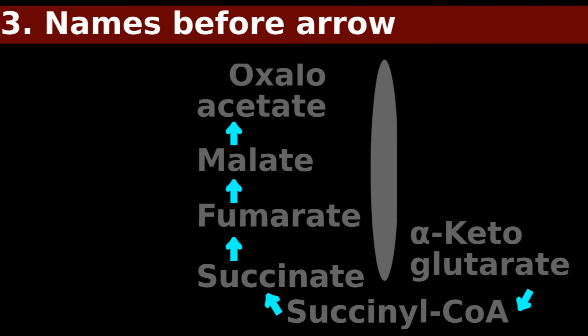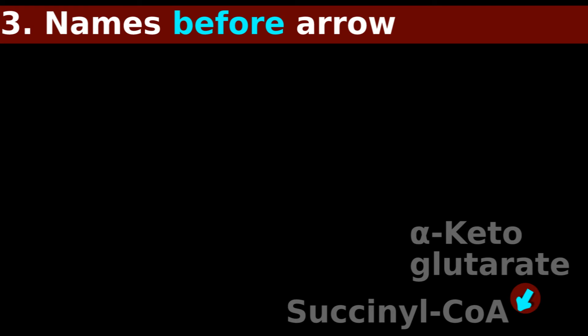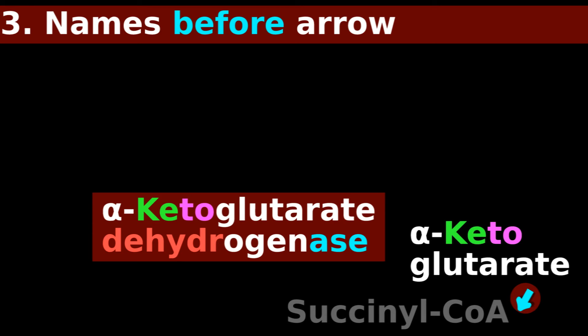Part 3. More names before the arrow. Now it's easier. The remainder of the steps are named based on what is before the arrow. What enzyme does this step? Before the arrow is alpha-ketoglutarate. So the enzyme should be alpha-ketoglutarate dehydrogenase.